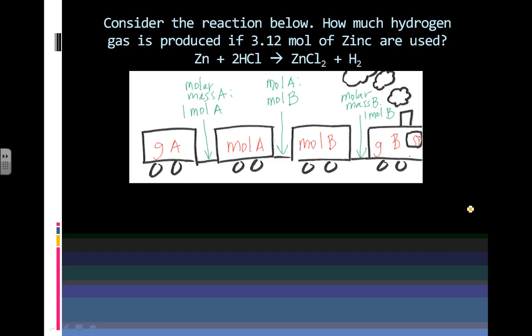We're going to do two examples and then you're going to do some practice problems on your own. Consider the reaction below. How much hydrogen gas is produced if 3.2 moles of zinc are used? So here's our reaction. Well, we're given 3.2 moles of zinc. That's going to be A. And we're asked for how much hydrogen. So hydrogen gas here is going to be B.